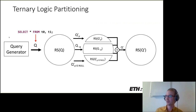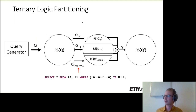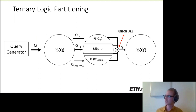The illustration shows how the previous example relates to the approach. For the original query Q, we had the simple cross product query. Then we have the partitioning queries — the non-negated version of the predicate, the negated version, and the IS NULL version. For the composition operator, we use the UNION ALL operator, which combines records without filtering out duplicate values.